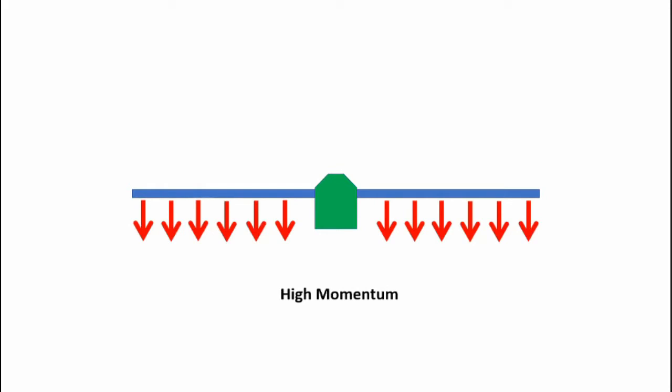Now here's the actuator disk. On top there's low momentum, quite possibly zero. The air is not moving at all. The airflow moves across the actuator disk and picks up momentum. So on the bottom of the actuator disk is a high momentum.